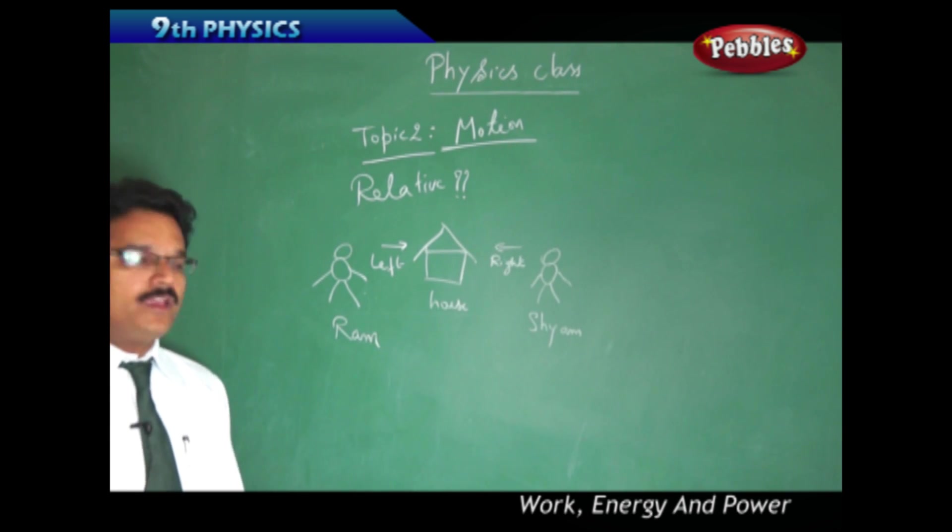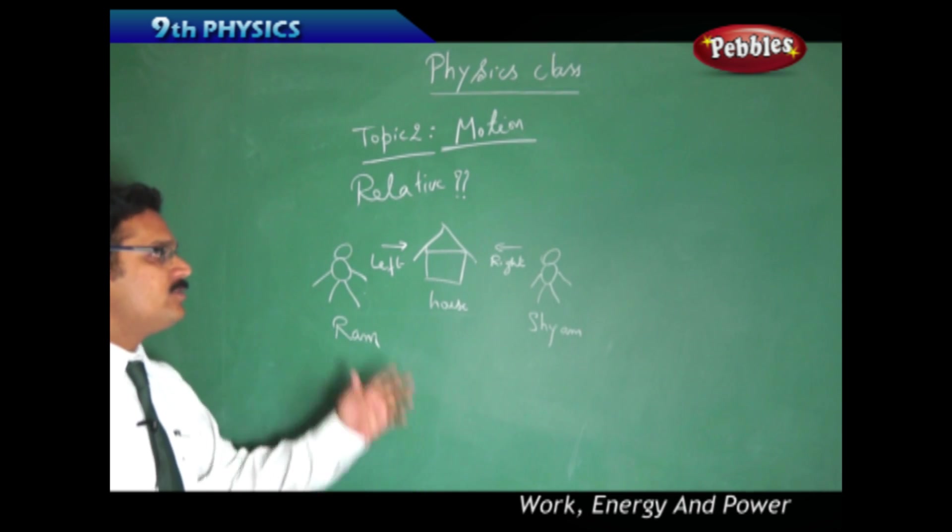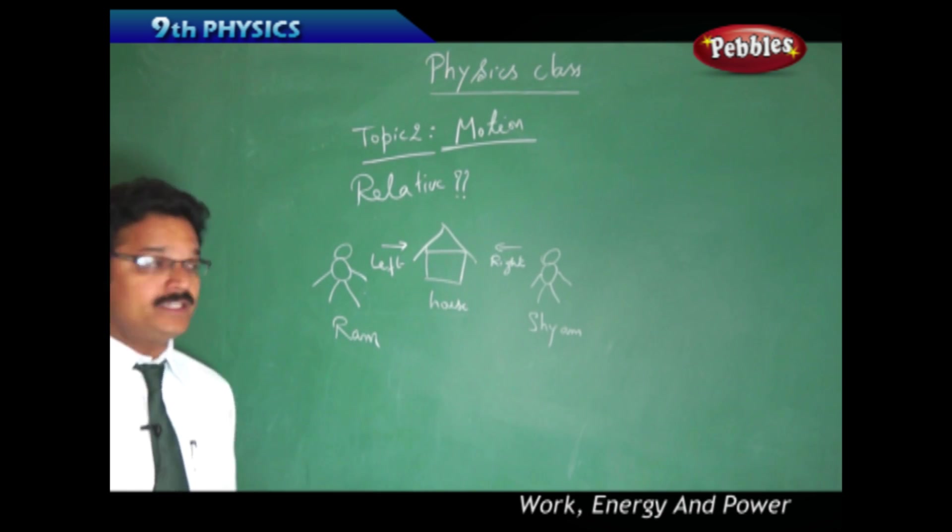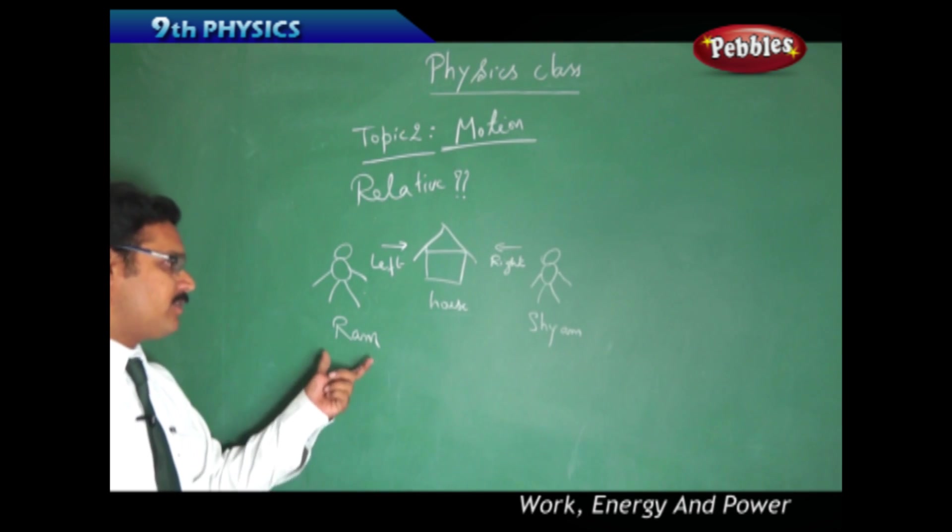According to Ram the house is on the left side, according to Sham the house is on the right side. So you couldn't decide that one is right and one is wrong because the house location is relative. According to Ram and according to Sham, both answers are correct. Location is relative. This is the first case.